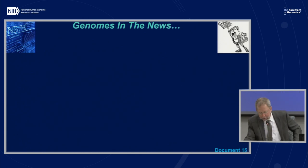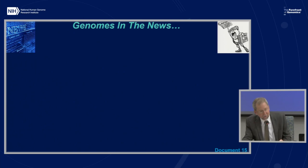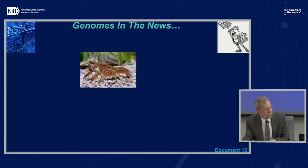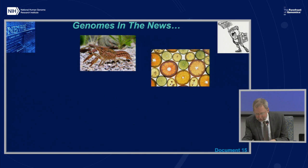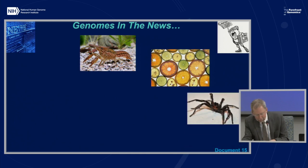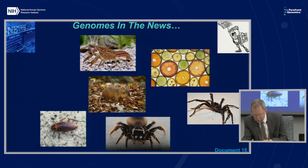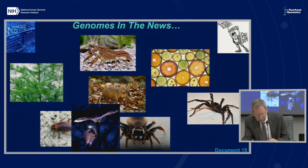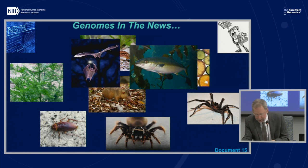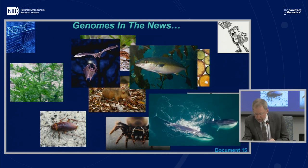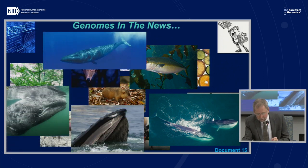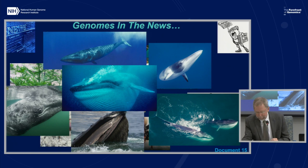And of course the update of genomes in the news: there have been a number of recently generated genome sequences reported since the last council meeting, including the marbled crayfish, 30 different citrus species, the Sydney funnel web spider, the eastern Australian mouse spider, the cockroach, Solendon, the sweet wormwood, the Egyptian rosette bat, the California yellowtail, and — here we go — the fin whale, humpback whale, gray whale, sei whale, minke whale, and blue whale. Once again, genomics finds its way throughout the world of animals and other life species.